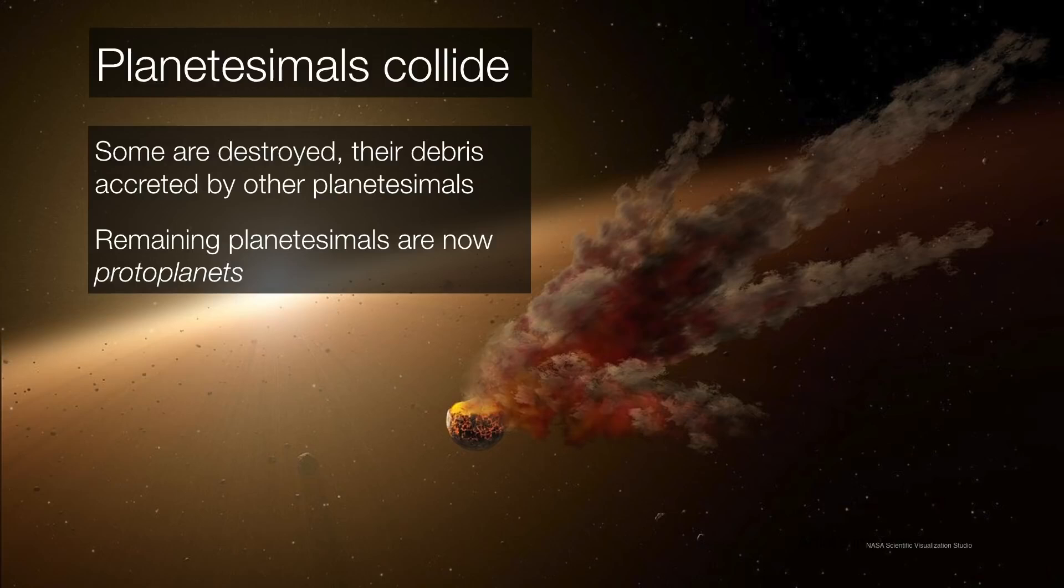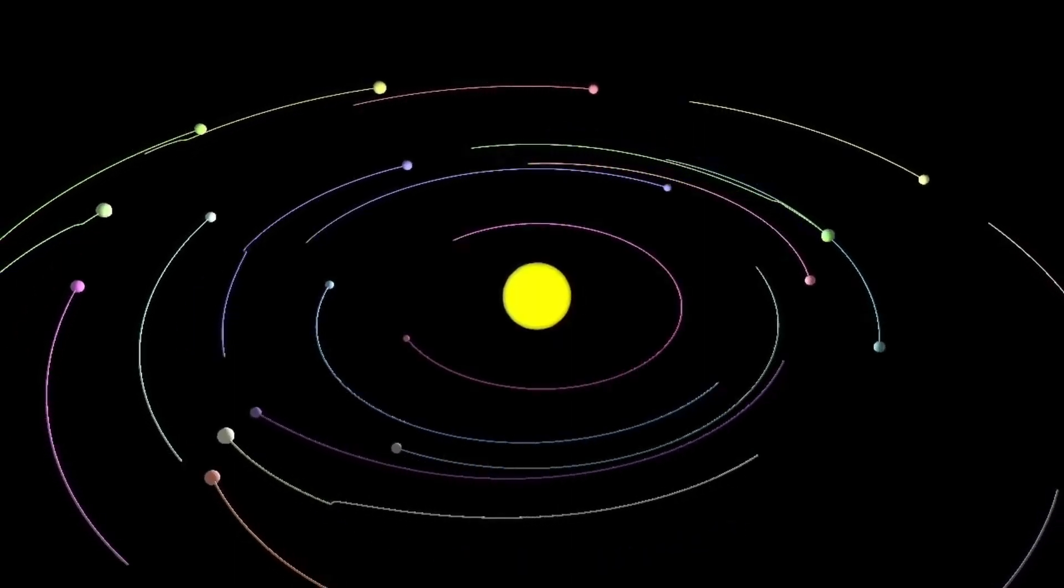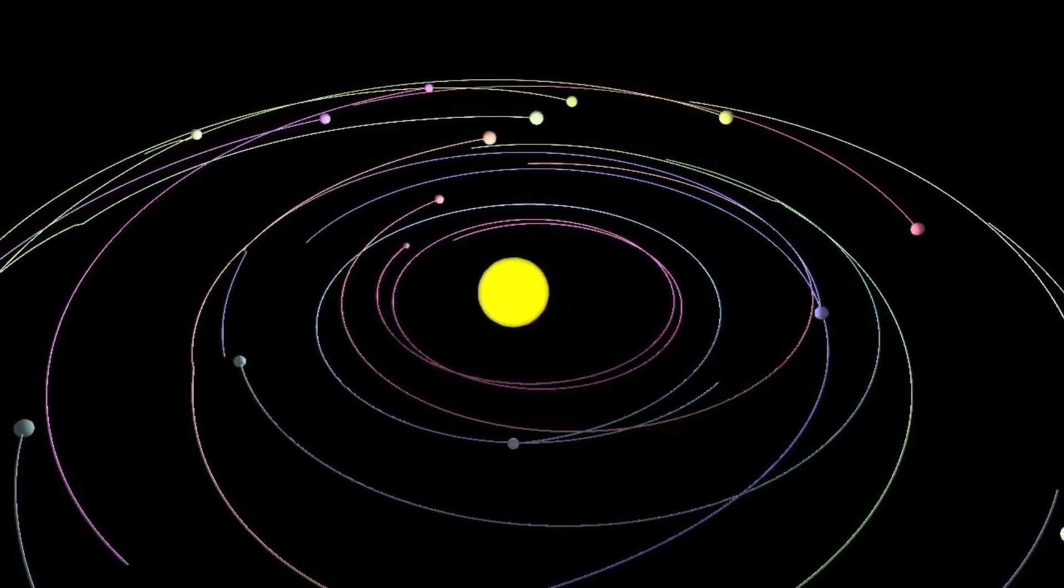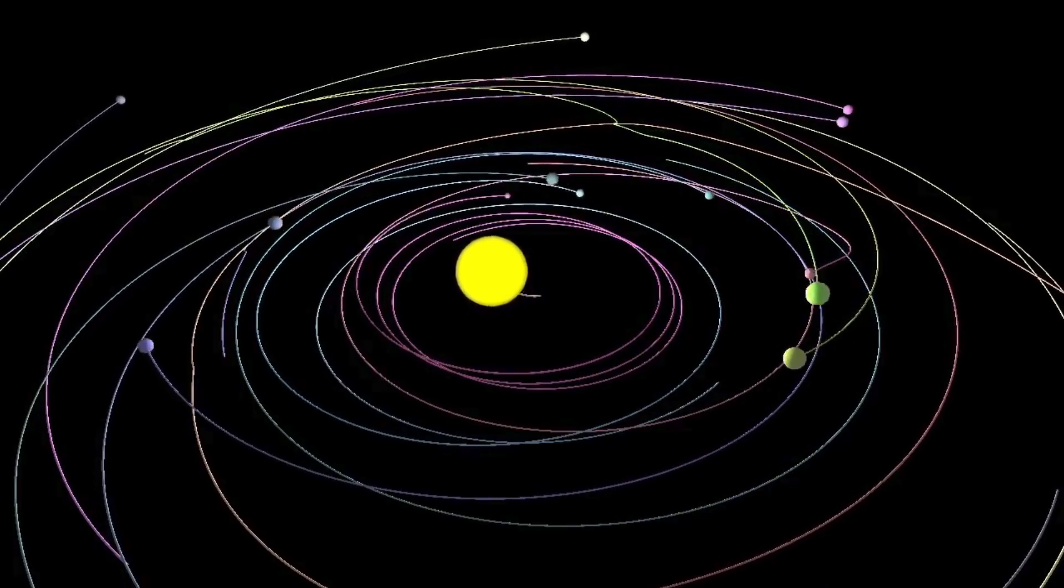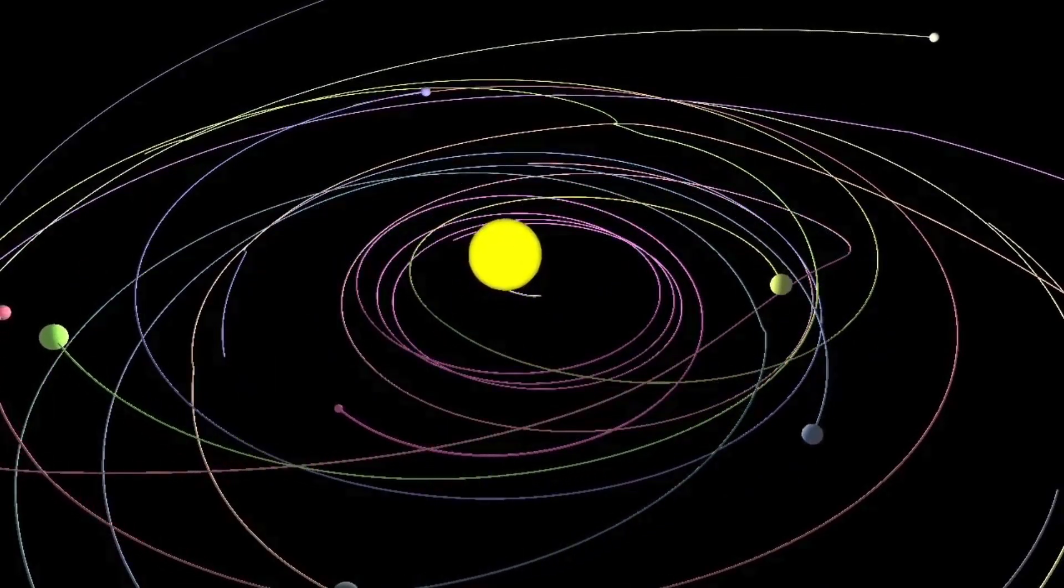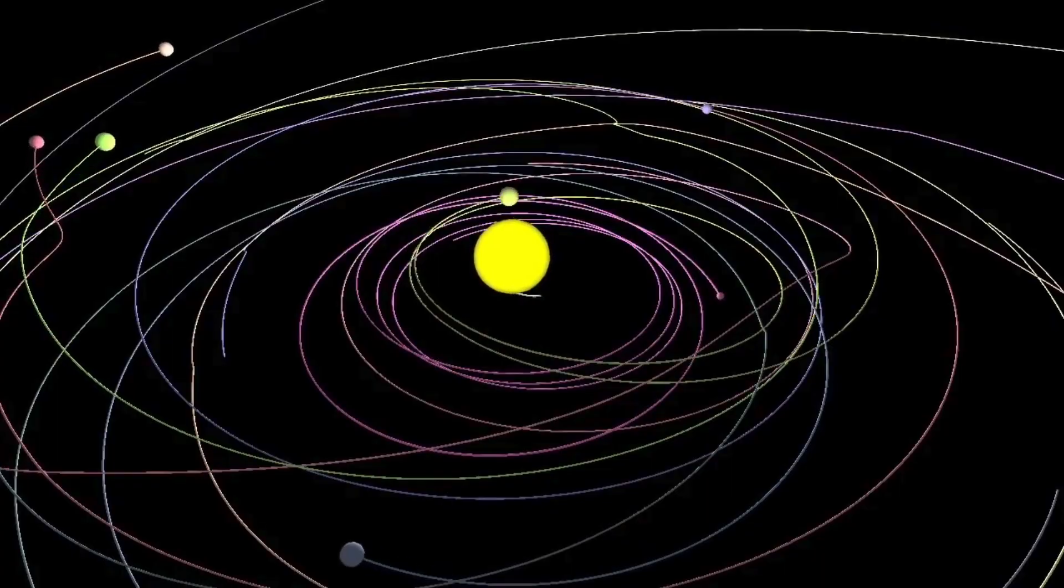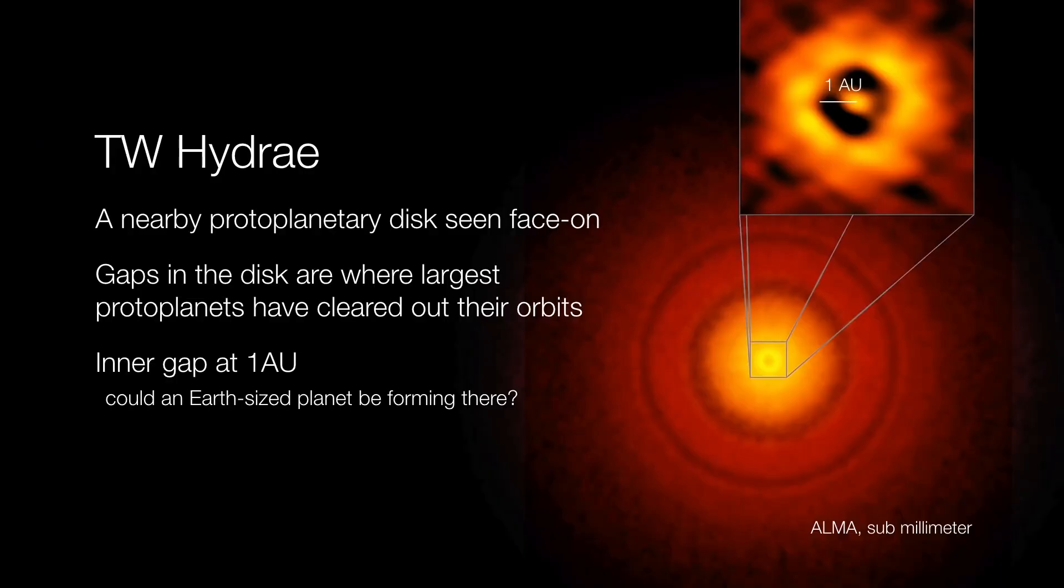These planetesimals collide in a kind of proto-solar system demolition derby. Most are destroyed and later accreted onto other planetesimals. The most massive planetesimals survive and are now proto-planets. They begin to clear out their orbits. You can even do a simple computer simulation like we have here, and you can easily see how, as objects collide into one another, there are fewer and fewer objects remaining. When we look in systems like TW Hydra, we can actually see those rings, those lanes being carved out by proto-planets within the disk.